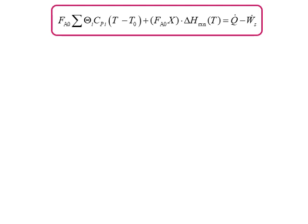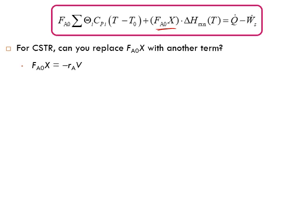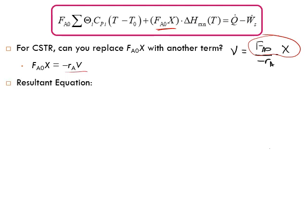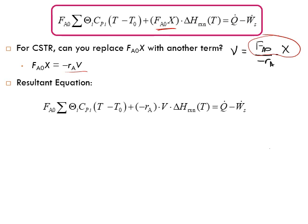For the CSTR energy balance, we can replace F_A0 times X with another term using the CSTR design equation: V = F_A0 / (-r_A) * X, so F_A0 * X = V * (-r_A). This resultant equation combines mole balance and energy balance, and is called the combined energy and material balance.